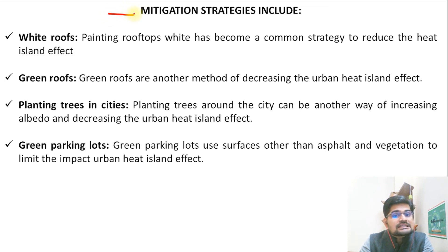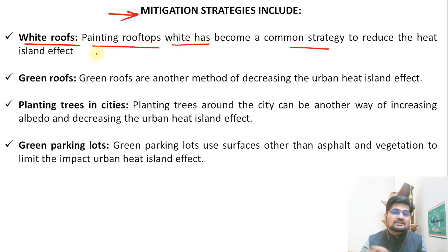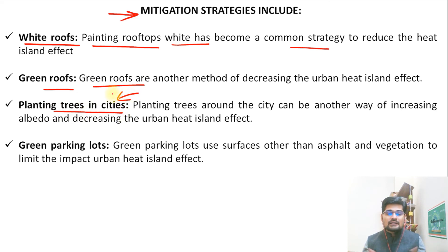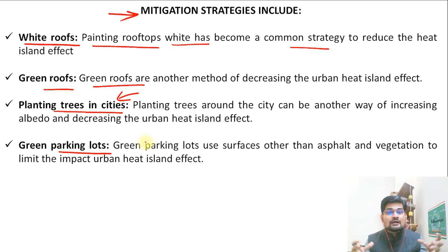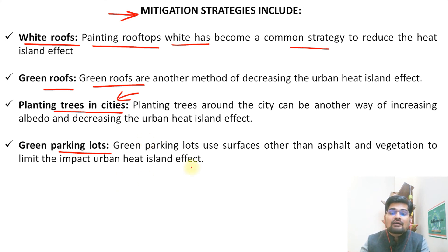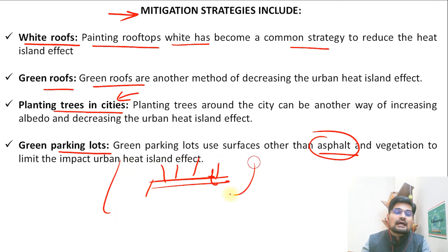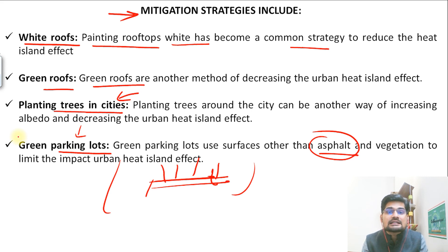Let's understand some mitigation strategies. White roofs — painting rooftops white — have become a common strategy because white provides more reflection than dark surfaces. Green buildings and green roof concepts are another approach. Planting trees in cities is important — many new societies are planned with parks and spaces for plantation. Green parking lots are also significant: parking spaces can be planned with shade areas where trees are planted, allowing more soil on the ground, enabling water percolation and reducing heat absorption. These strategies and more are essential in the current era of urbanization.